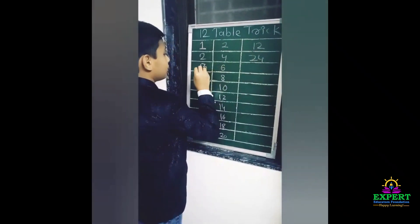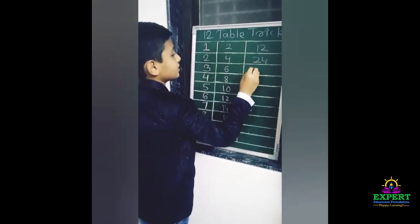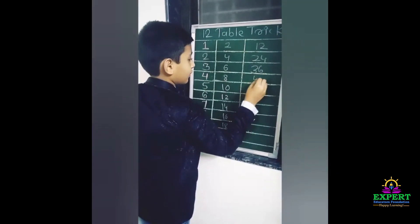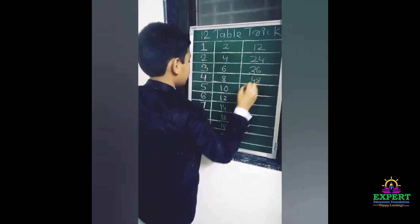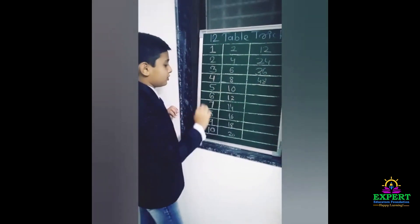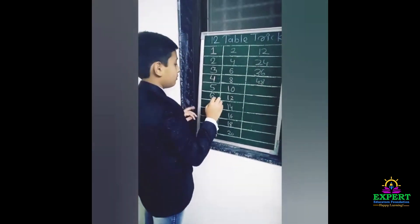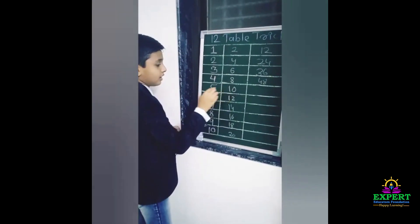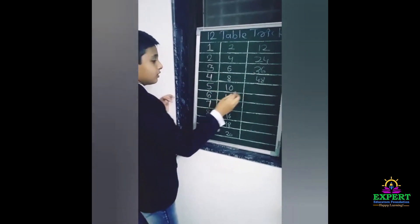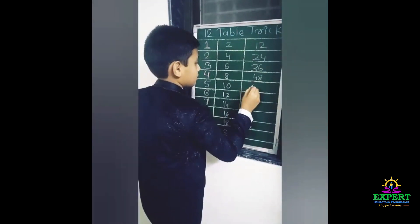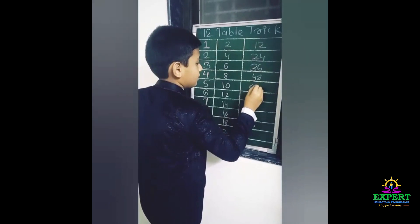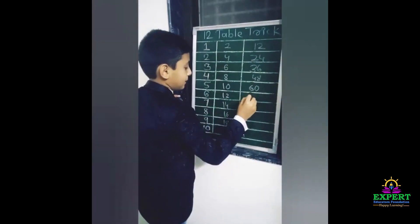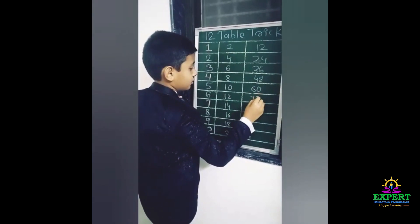Now here is a two-digit number, so here we add both digits. Five and one — five plus one is six, so sixty. Six and one — six plus one is seven, so seventy-two.